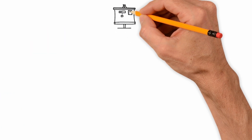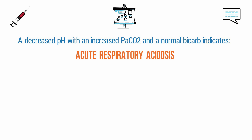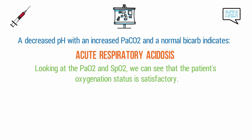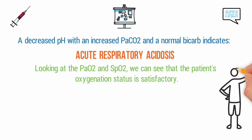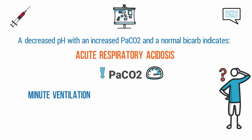We're about to break it all down step by step, but if you knew the answer before the explanation, let me know in the comments. To come up with the correct answer, the first thing we need to do is interpret the ABG results. A decreased pH with an increased PaCO2 and a normal bicarb indicates acute respiratory acidosis. Looking at the PaO2 and SpO2, the patient's oxygenation status is satisfactory. So we need to figure out what we can do to correct the respiratory acidosis and get the pH back into the normal range. The elevated PaCO2 is causing the acidosis, meaning we need to blow off excess CO2 by increasing the minute ventilation.